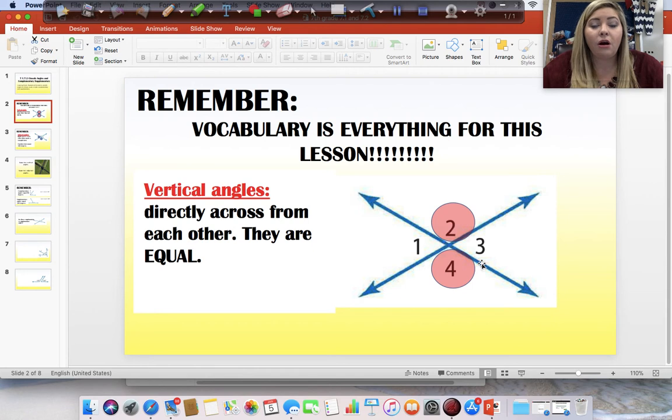So, one and three are equal. Two and four are equal. Vertical angles across and equal. Good? Vertical angles. Don't forget.